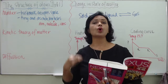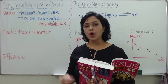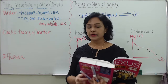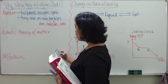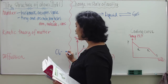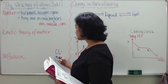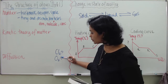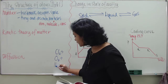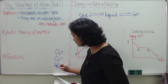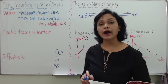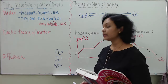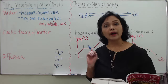A molecule can consist of two or more atoms, or two or more different types of atoms. For instance, chlorine consists of two chlorine atoms, and oxygen consists of two oxygen atoms. Water, H2O, consists of different types of elements — hydrogen and oxygen — and that is the reason why it is also called a molecule.